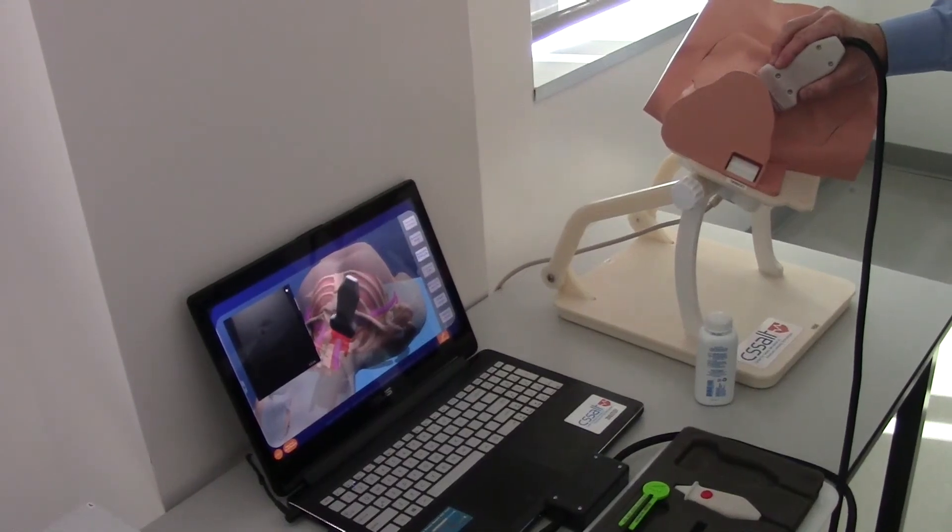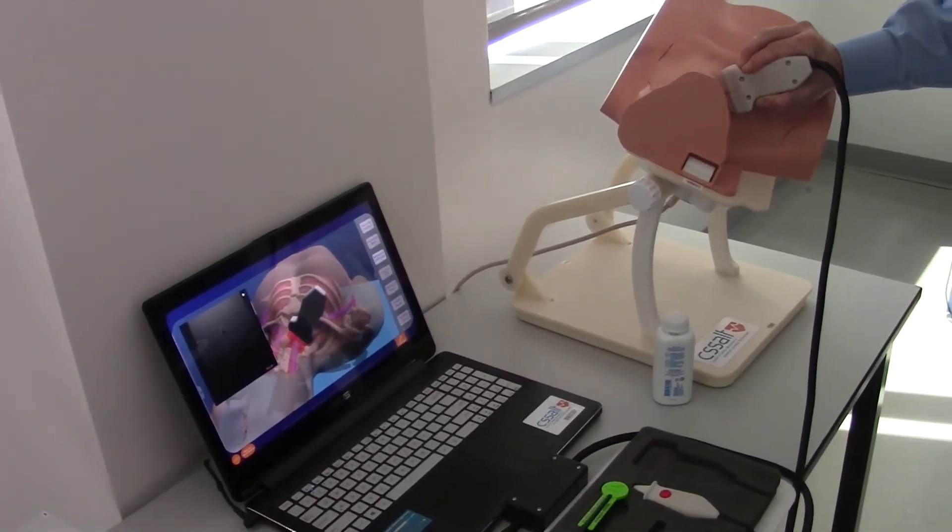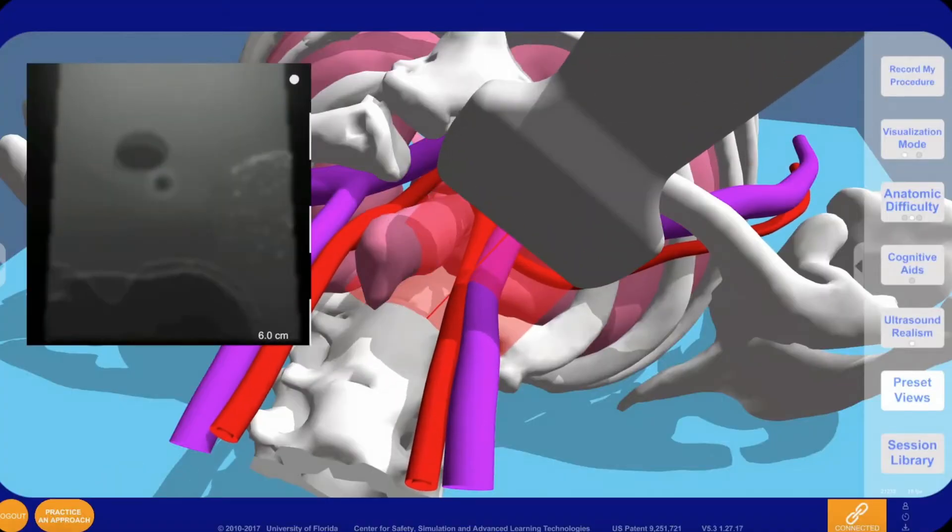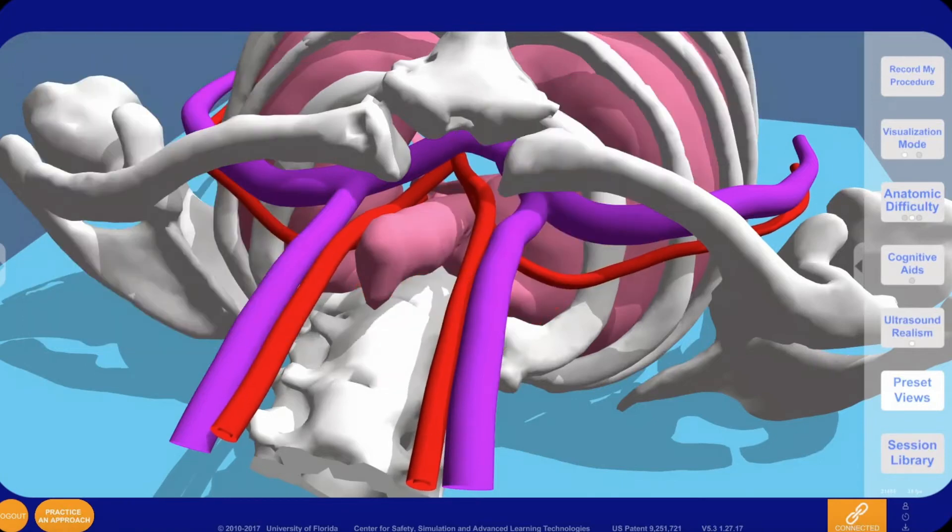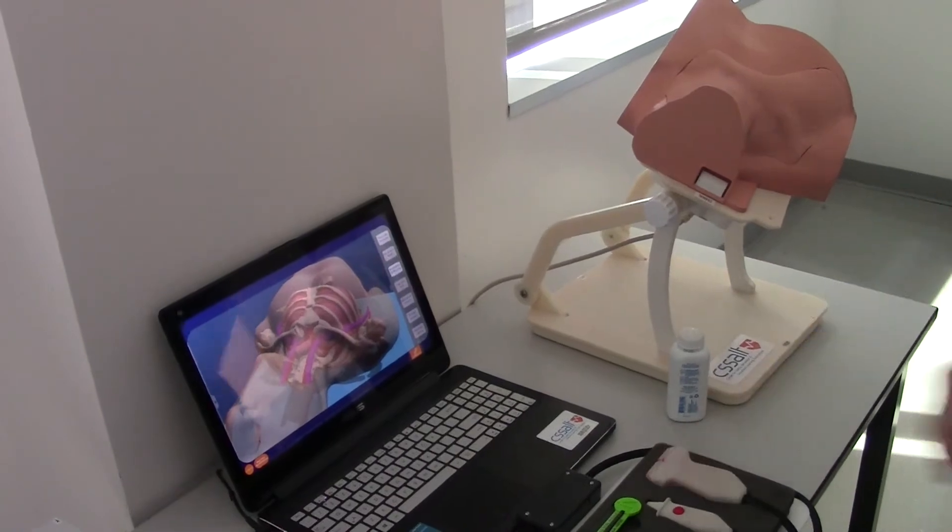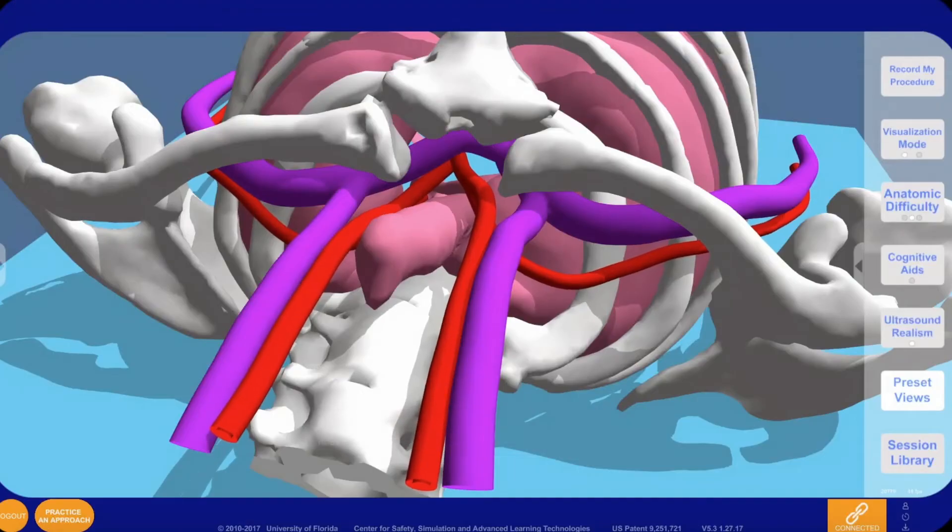Virtual veins can be compressed by the ultrasound probe and by the needle. Users can learn to be mindful that veins can fully compress flat if too much pressure is applied. This encourages backwalling, which the simulator will detect. Users can also use ultrasound probe pressure to distinguish the vein from the artery, which does not compress and pulsates.